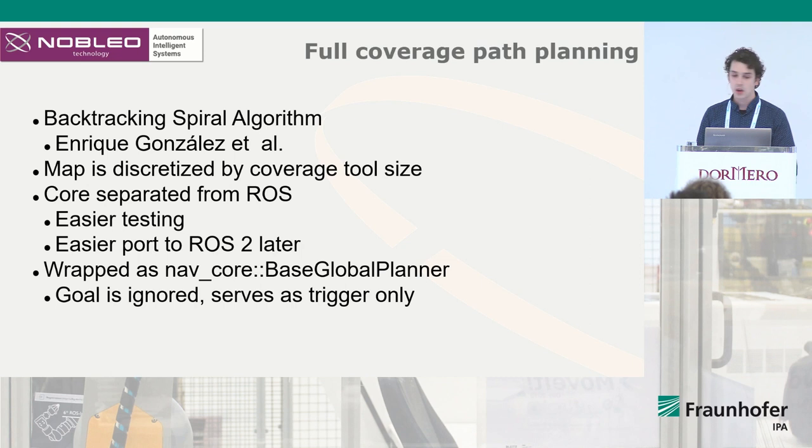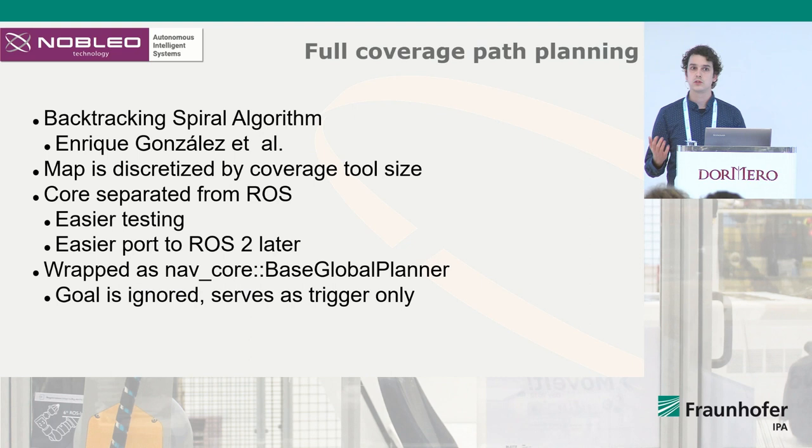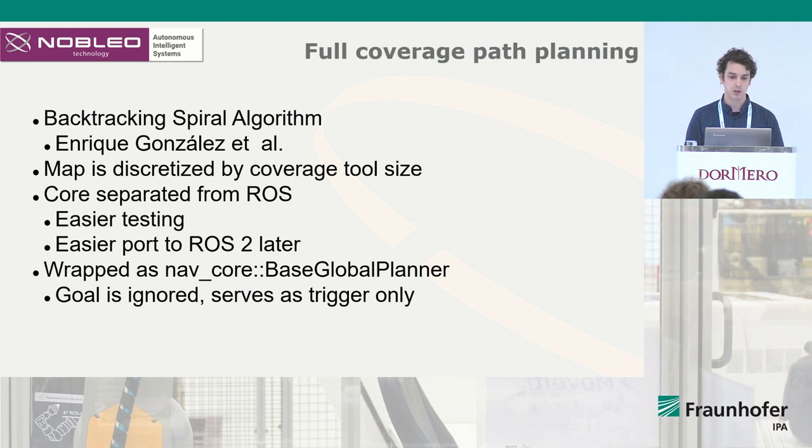Per the definition of the problem, typically in MoveBase you move from point A, where the robot currently is, to point B, where you want it to go. In the case of full coverage, there is no point B — point B is essentially everywhere. So in this case we ignore the goal point; point B is ignored.